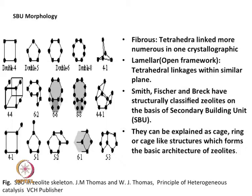The secondary building units give a wide range of zeolite structures. Fibrous zeolites have tetrahedra linked more numerous in one crystallographic direction. Lamellar structures are slit-type structures like natural clay materials — kaolin, ceramic calcium-element-type materials — where tetrahedral linkage is within the same plane, giving a layered structure.